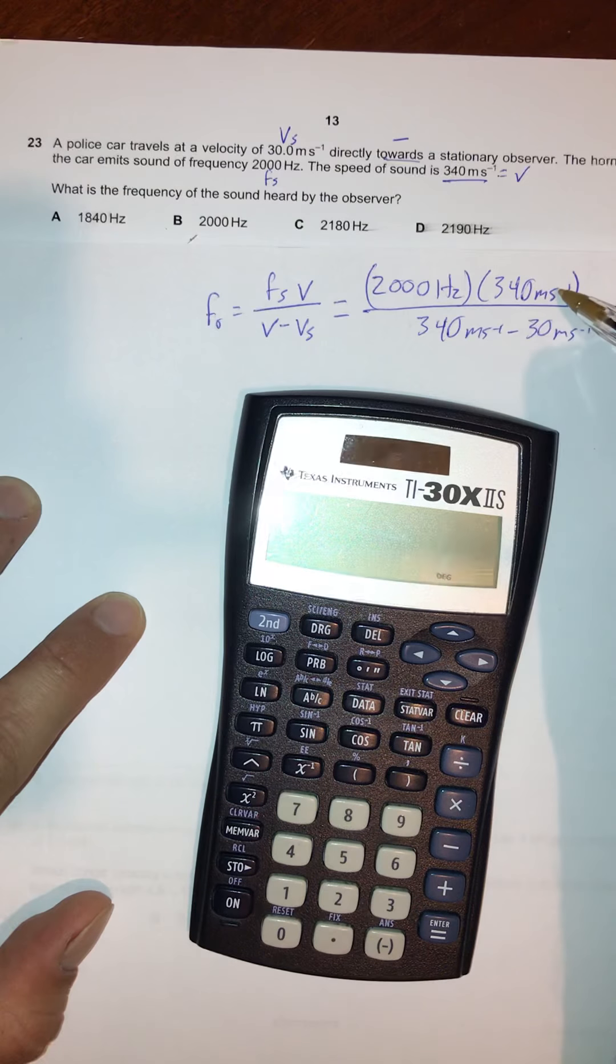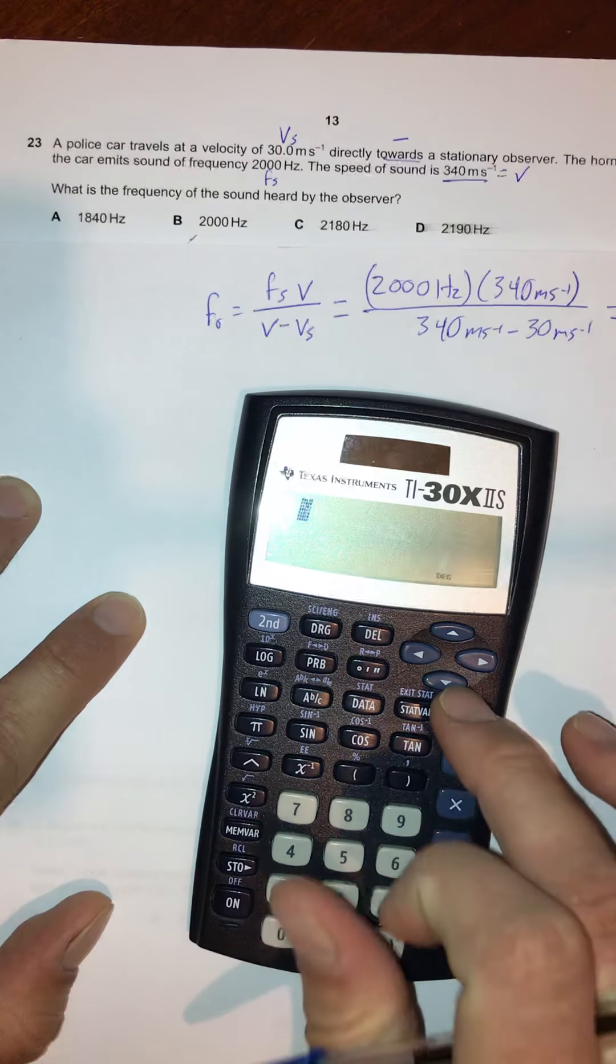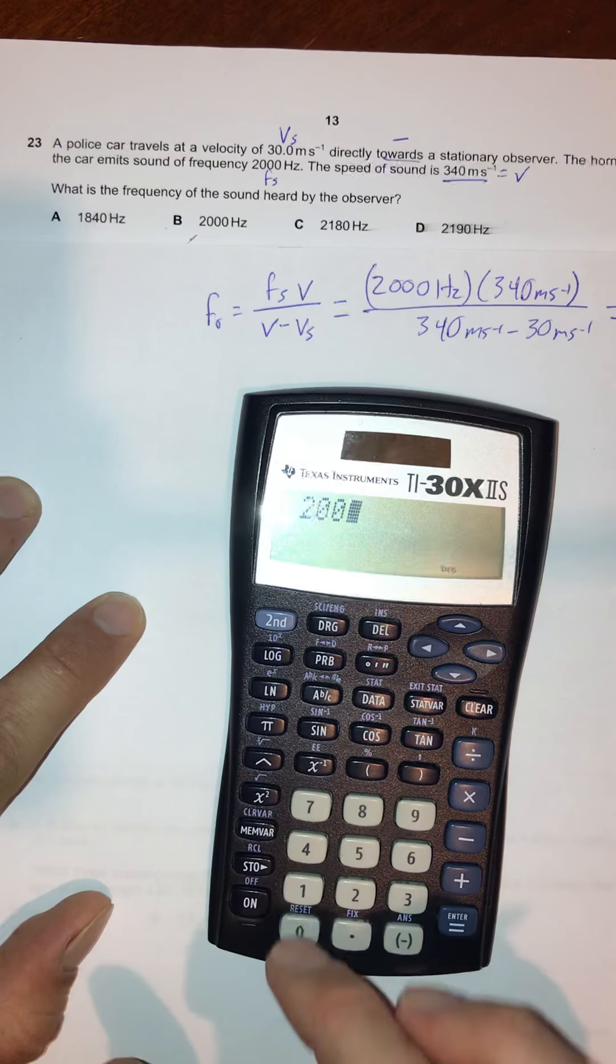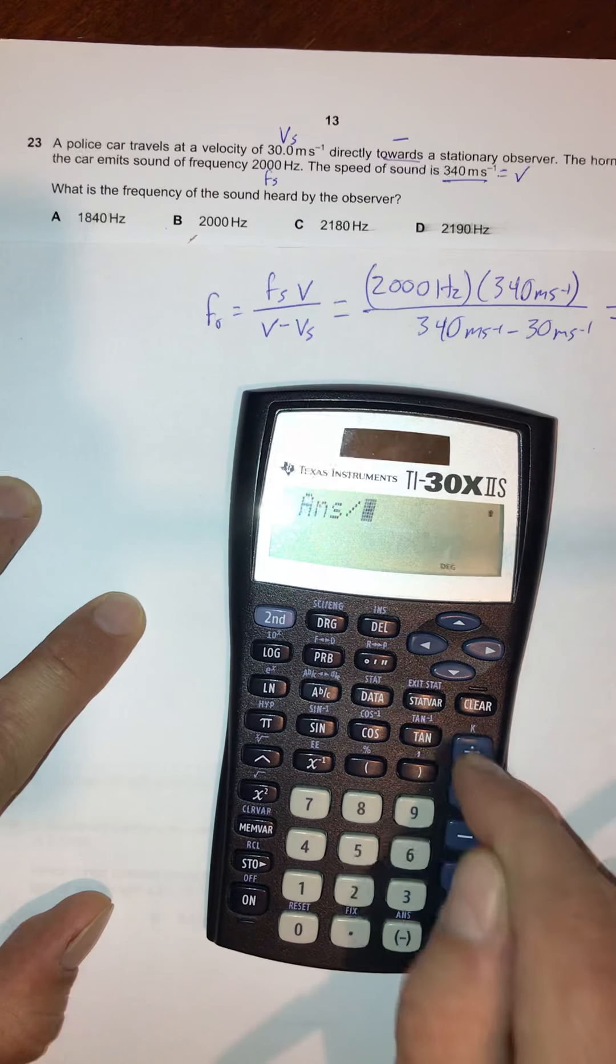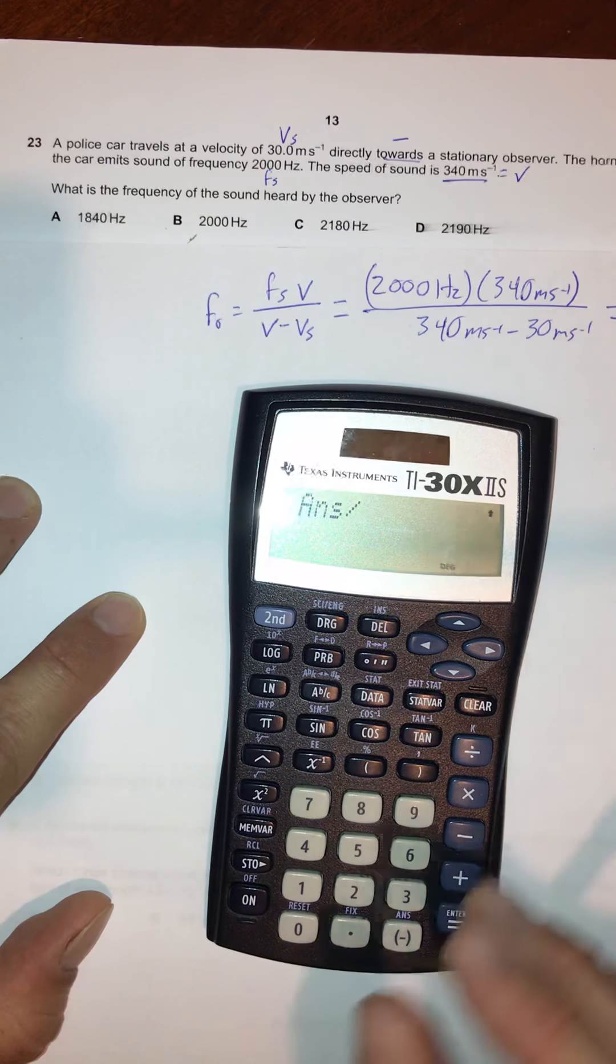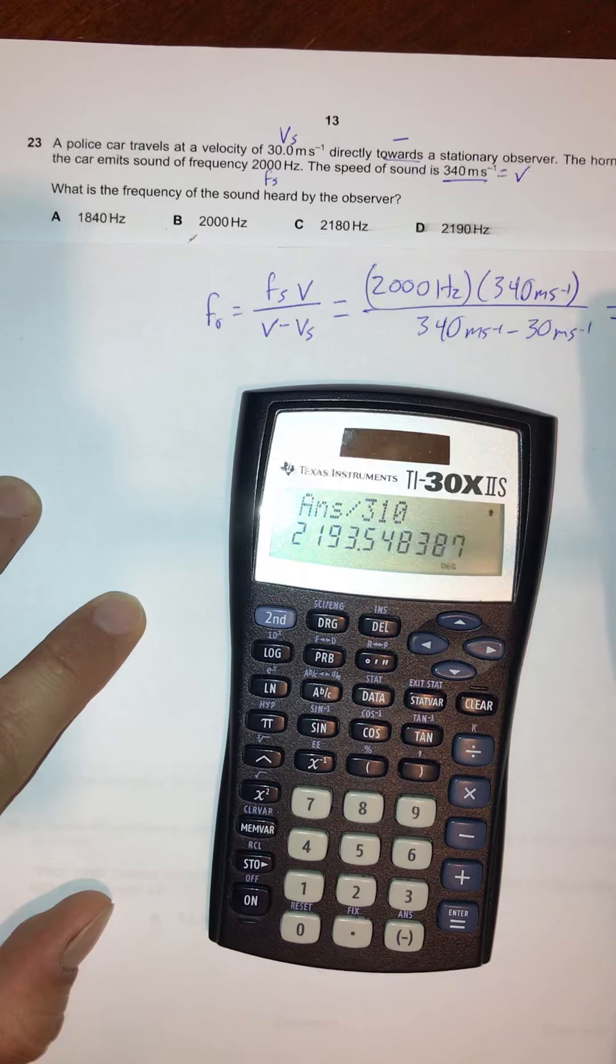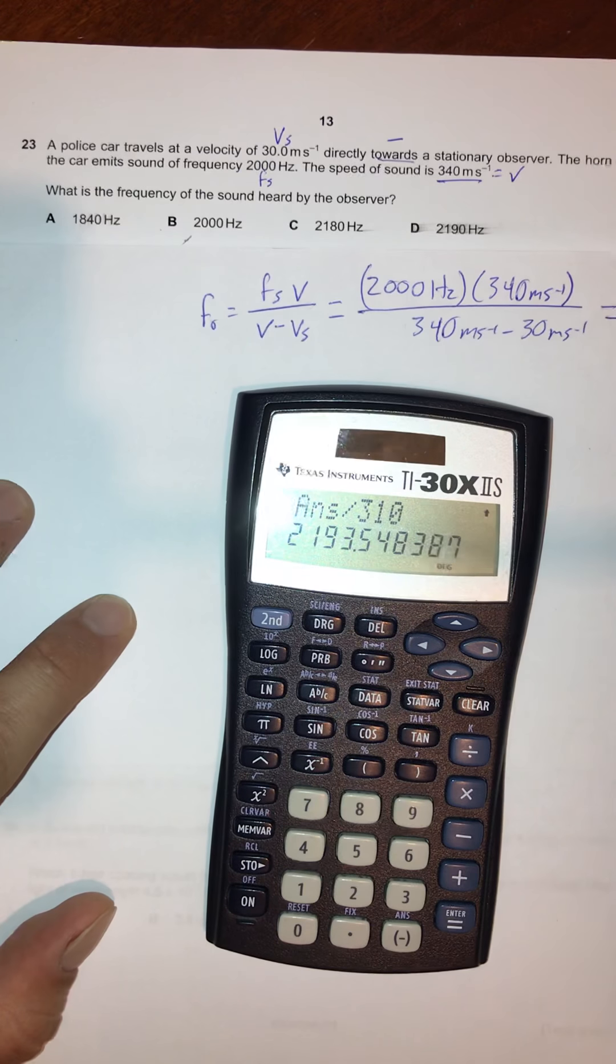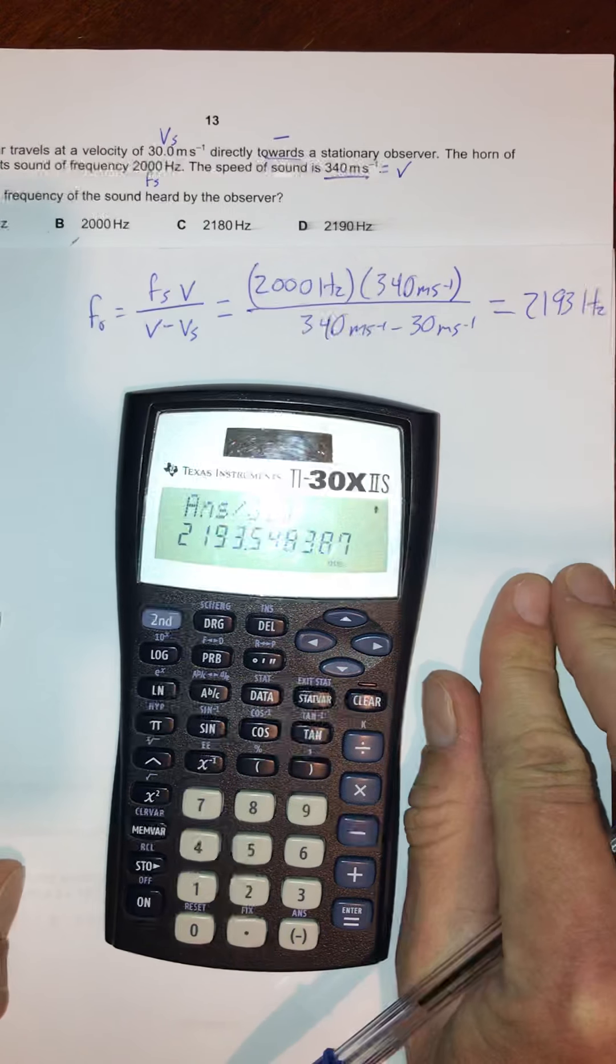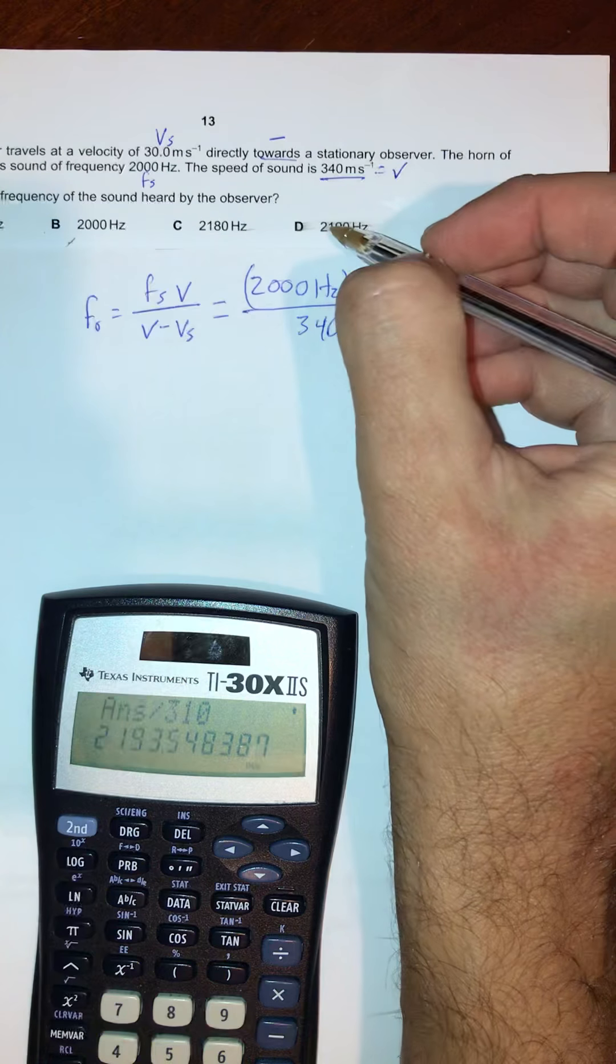You can see here the units, meters per second, are going to cancel out, and we're going to be left with hertz, and so we're going to solve for frequency. 2,000 times 340, divided by 340 minus 30 is 310. So we get 2,193 hertz, which is pretty close to choice D.